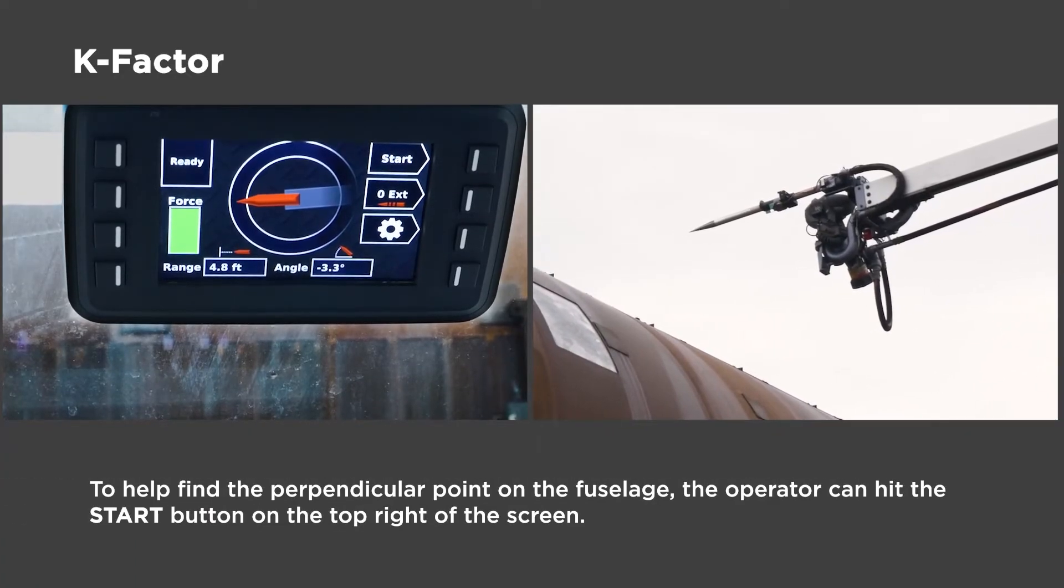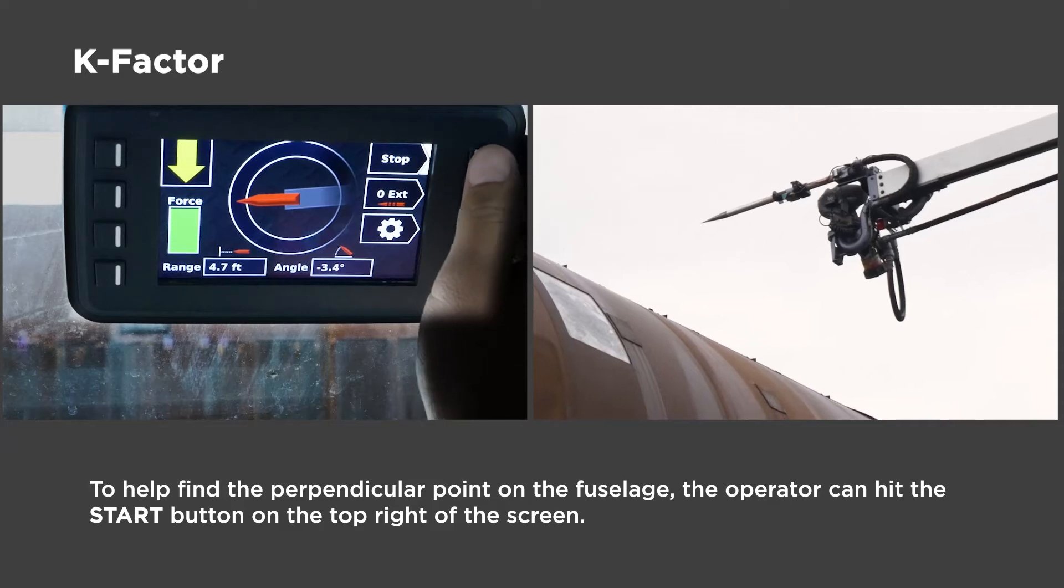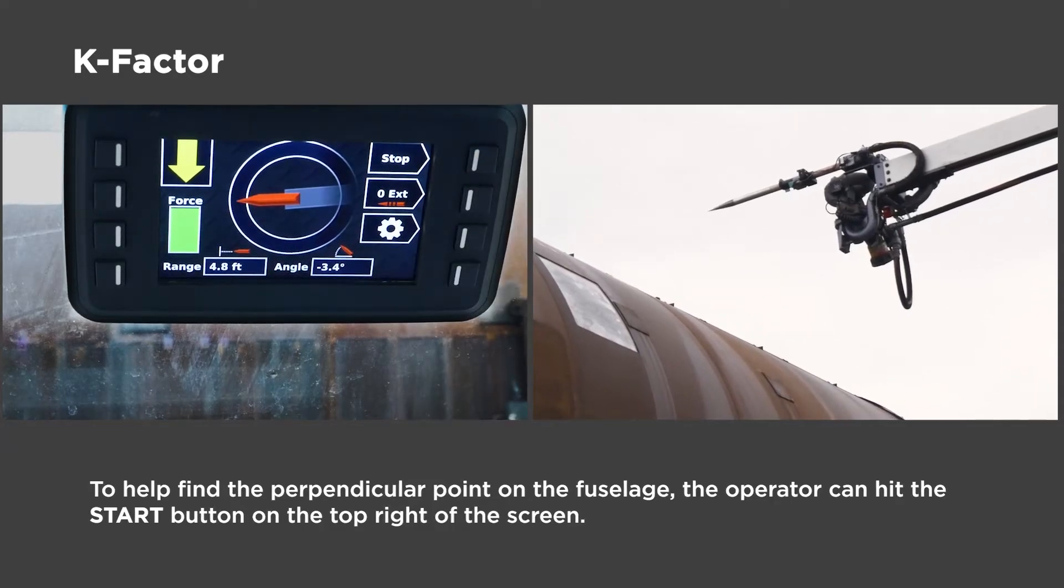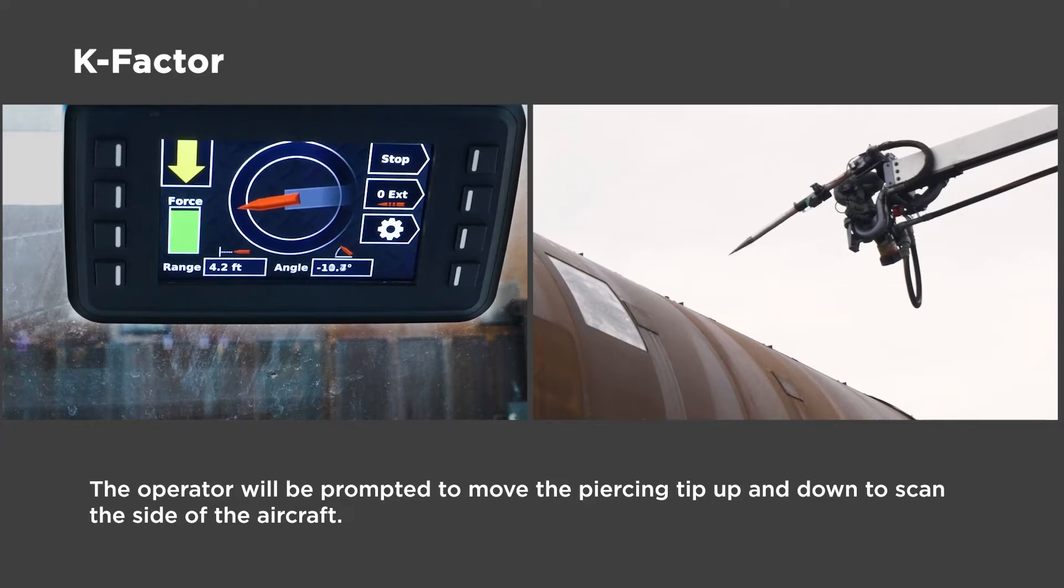To help find the perpendicular point on the fuselage, the operator will then hit the start button on the top right of the screen. The operator will then be prompted to move the piercing tip up and down to scan the side of the aircraft.